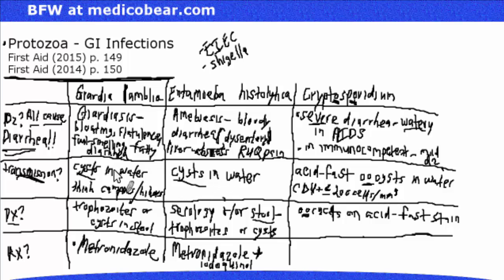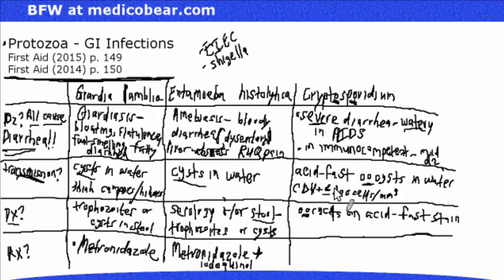Unlike Giardia and Entamoeba with their cysts in water, transmission for Cryptosporidium is via acid-fast oocysts in water — that's oocyst with two O's. A mnemonic: look at the word 'Cryptosporidium' and you'll find two O's, helping you remember oocysts. A CD4 count under 200 cells per mm³ is a big indicator — when the T-cell CD4 count is at 200 or below, it should signal Cryptosporidium infection, especially with diarrhea.